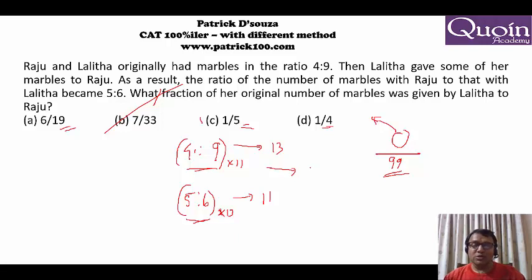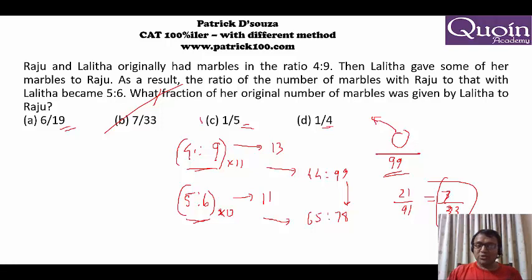But I will anyway solve just for your understanding. This 44 is to 99 is the marbles later. Initially the marbles would be 65 is to 78. So number of marbles that Lalitha gave was 99 minus 78 which is 21 upon 99 which is 7 upon 33. So again I solved it just looking at the option and I cross-checked it also. You need not cross-check it normally. You get the answer you can do it really fast.